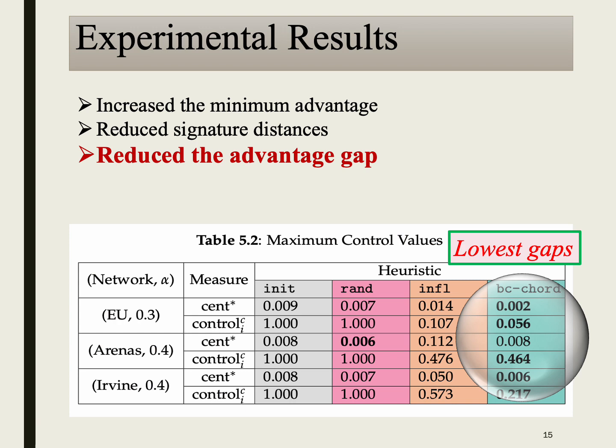Our final objective is to reduce access disparities among nodes. We assess this by measuring the advantage gap among nodes for all three measures of advantage, where a lower gap indicates better performance. So far, Influ and BC chord were the best-performing heuristics. Note that BC chord intuitively focuses on the broadcast measure while Influ focuses on the influence measure. However, in reducing the advantage gap, BC chord significantly outperforms Influ. This supports our suspicion that optimizing based on influence may contribute to a rich-get-richer phenomenon, and highlights the importance of connecting disadvantaged nodes together rather than solely connecting them to a central node.